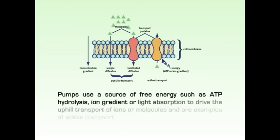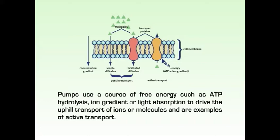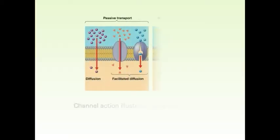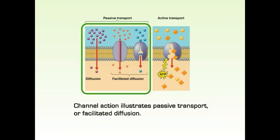Pumps use a source of free energy such as ATP hydrolysis, ion gradient, or light absorption to drive the uphill transport of ions or molecules and are examples of active transport. Channels, in contrast, enable ions to flow rapidly through membranes in a downhill direction. Channel action illustrates passive transport or facilitated diffusion.